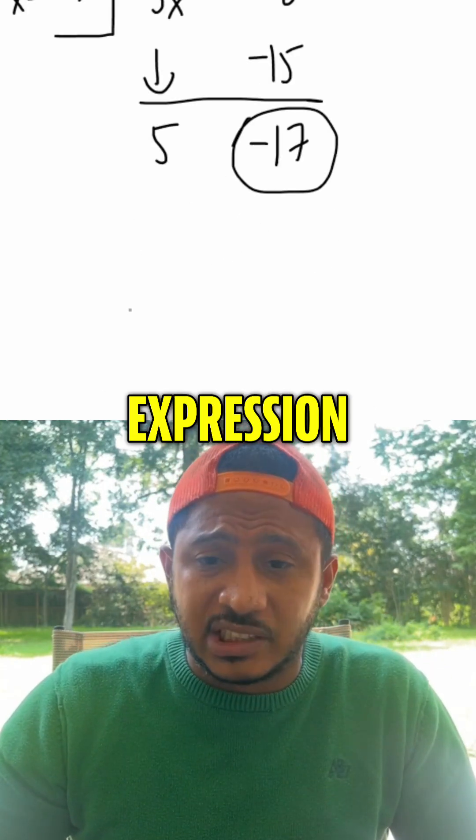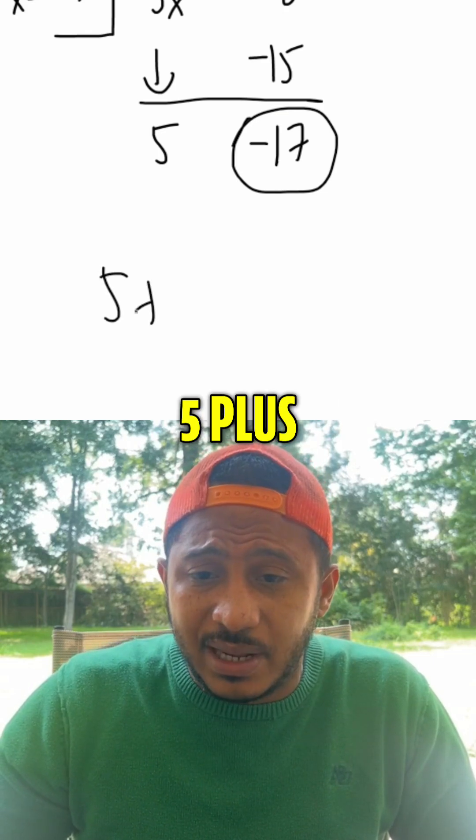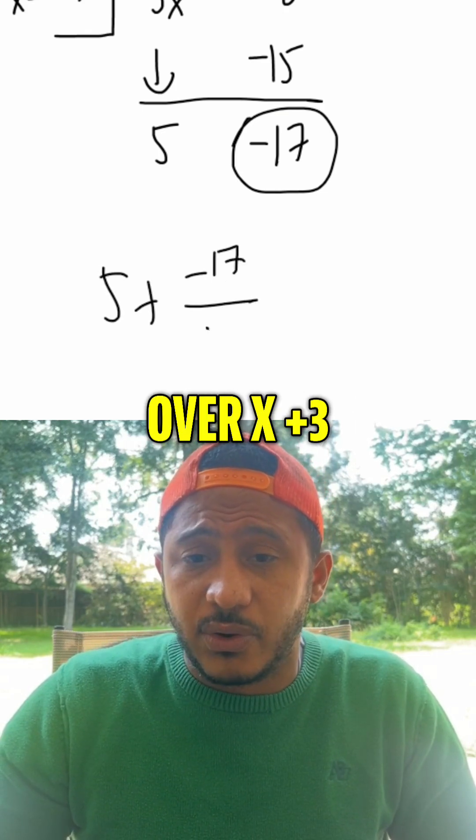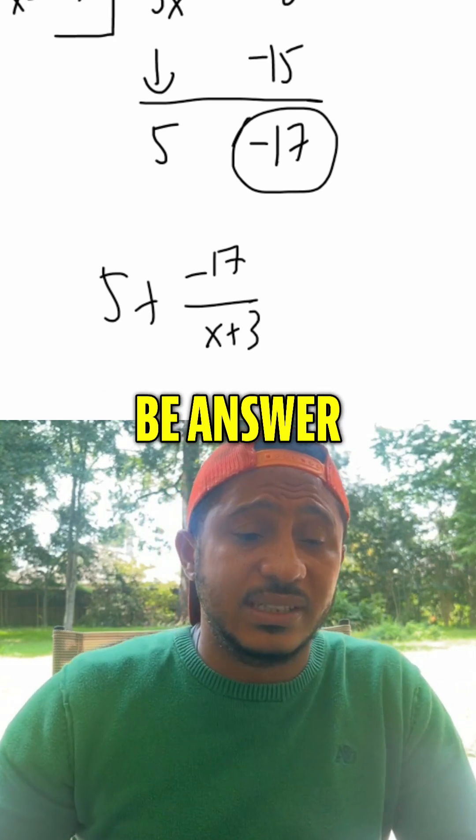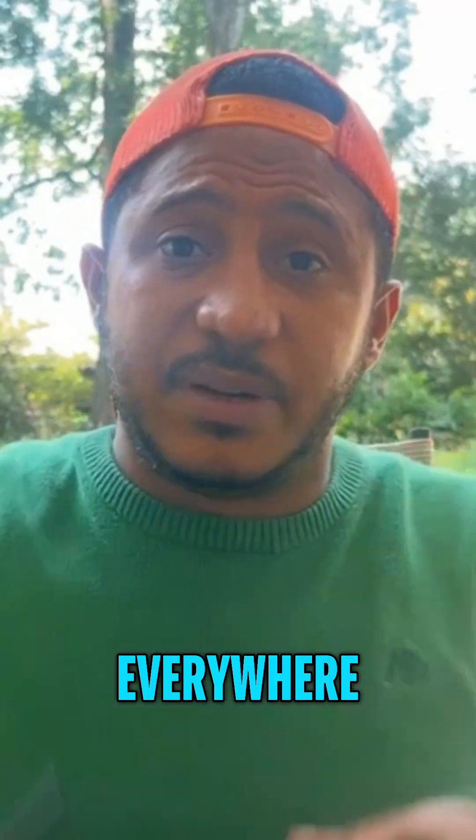So an equivalent expression would be 5 plus negative 17 over x plus 3, the thing I was dividing by, which would be answer D. Always remember, math is everywhere.